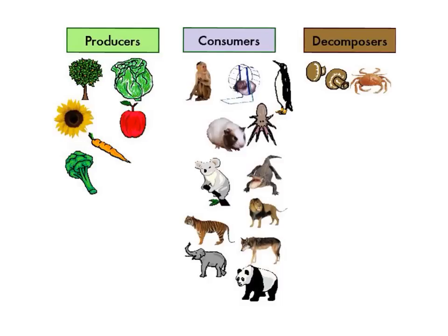Humans are omnivores. Penguins, hamsters, elephants, and tigers are other examples of consumers.